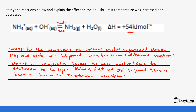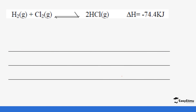Now let's look at another example. Looking at this reaction, the forward reaction has a negative energy value, which tells you that it is exothermic. So the forward reaction is exothermic, which makes the back reaction endothermic.